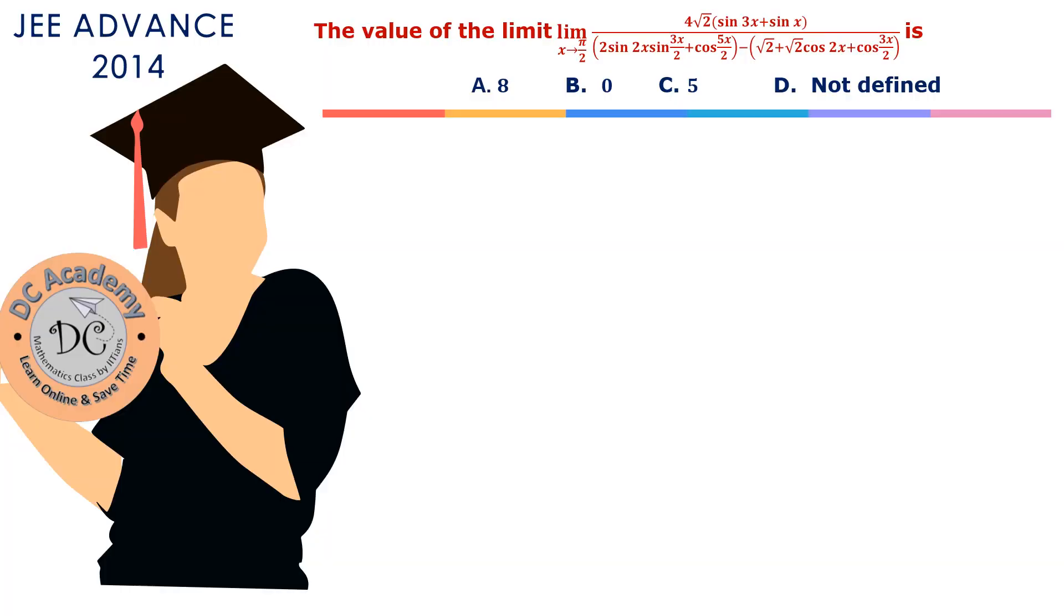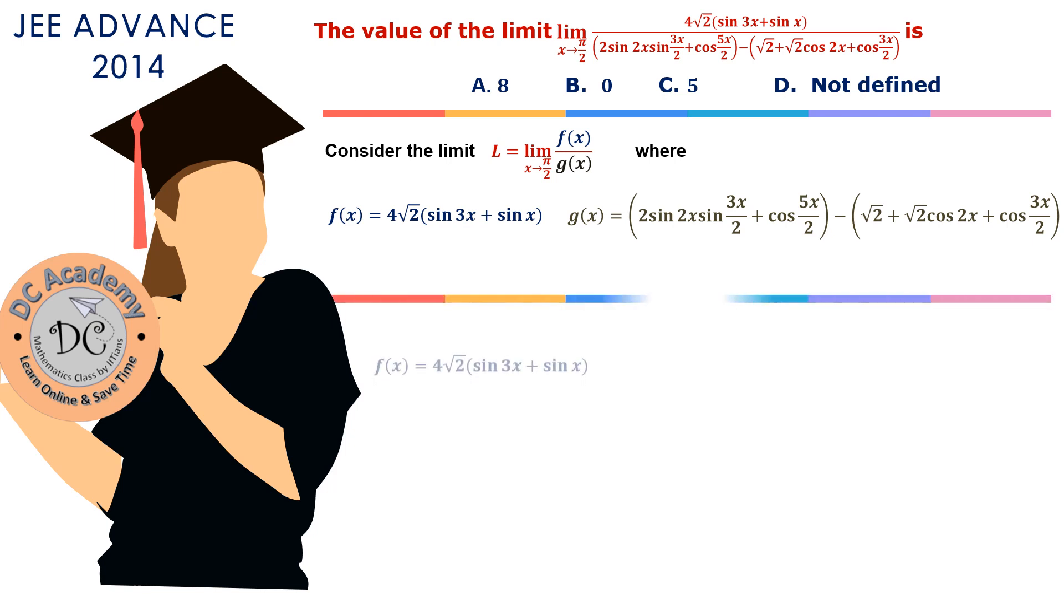First we consider the limit as x tends to π/2 of f(x)/g(x), where f(x) is 4√2(sin 3x + sin x) and g(x) is the denominator. Now we need to simplify f(x) and g(x) separately so that something common can be cancelled, because if we apply x tends to π/2, it will be 0/0 form. So now we consider f(x) and try to simplify it.